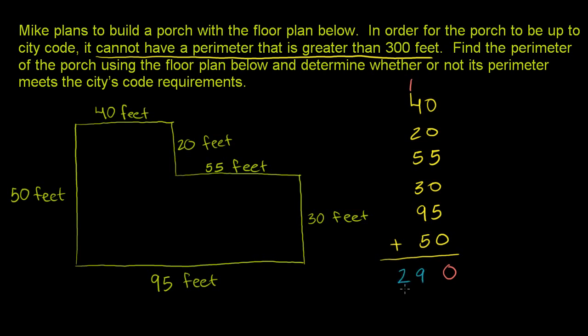So the total perimeter of Mike's porch here is 290 feet, which is less than 300 feet. So it meets the city code. It could have even been equal to 300 feet. So we could say it just has to be less than or equal to 300 feet, and we meet our city code. So he can go ahead and build this porch.